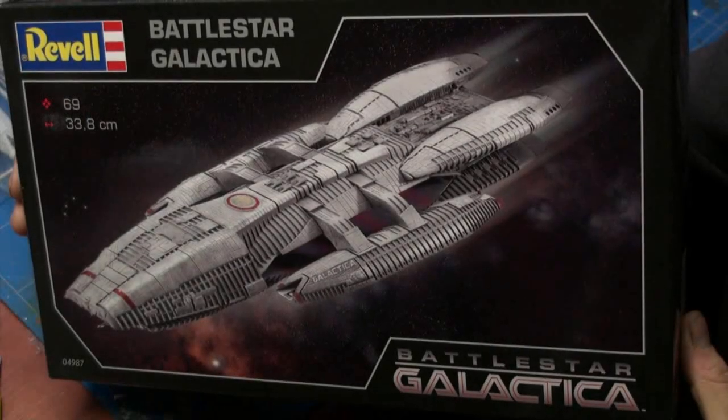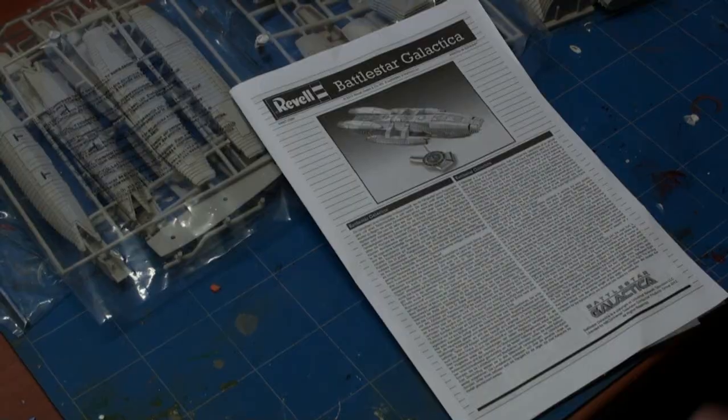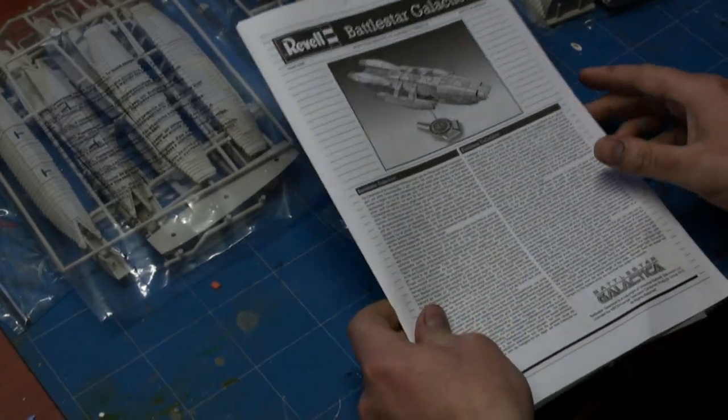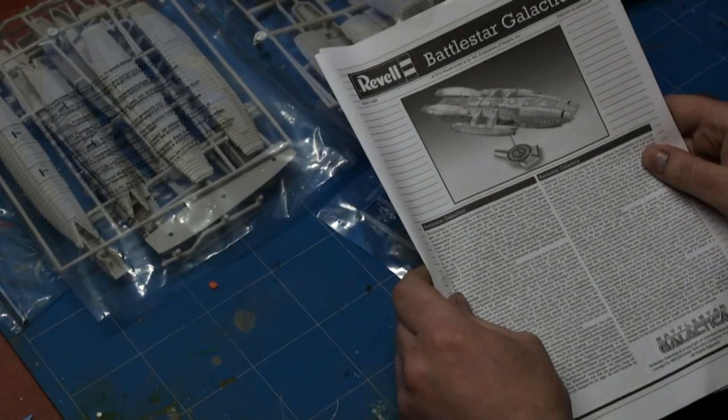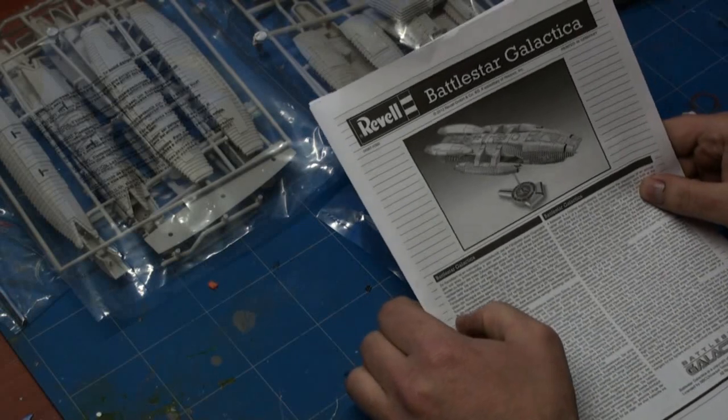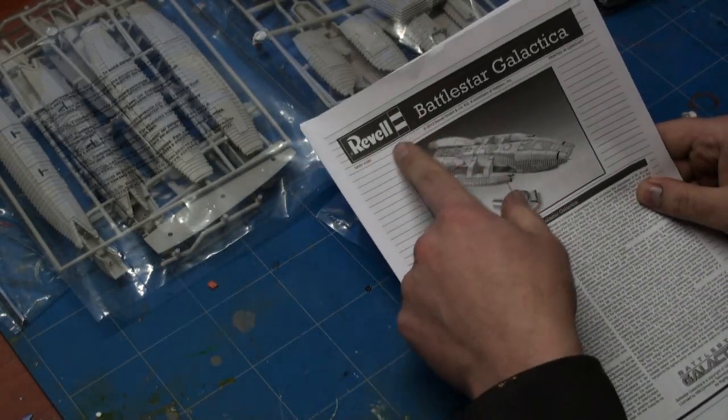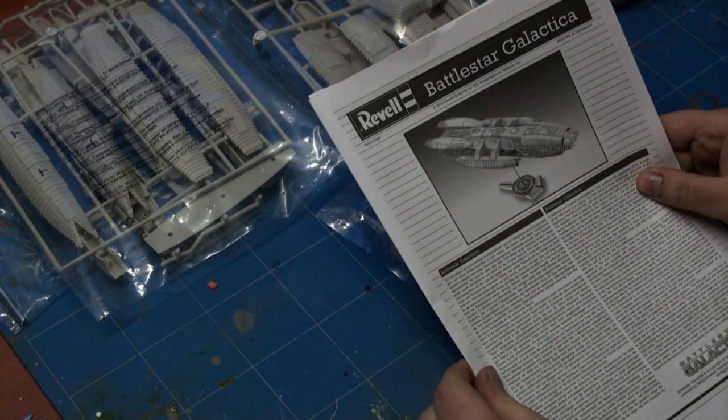Here we have the Battlestar Galactica, the new version. This is a model kit originally by Moebius, but in Europe it's sold by Revell, and that means there are a few changes in the accompanying booklet and decals.